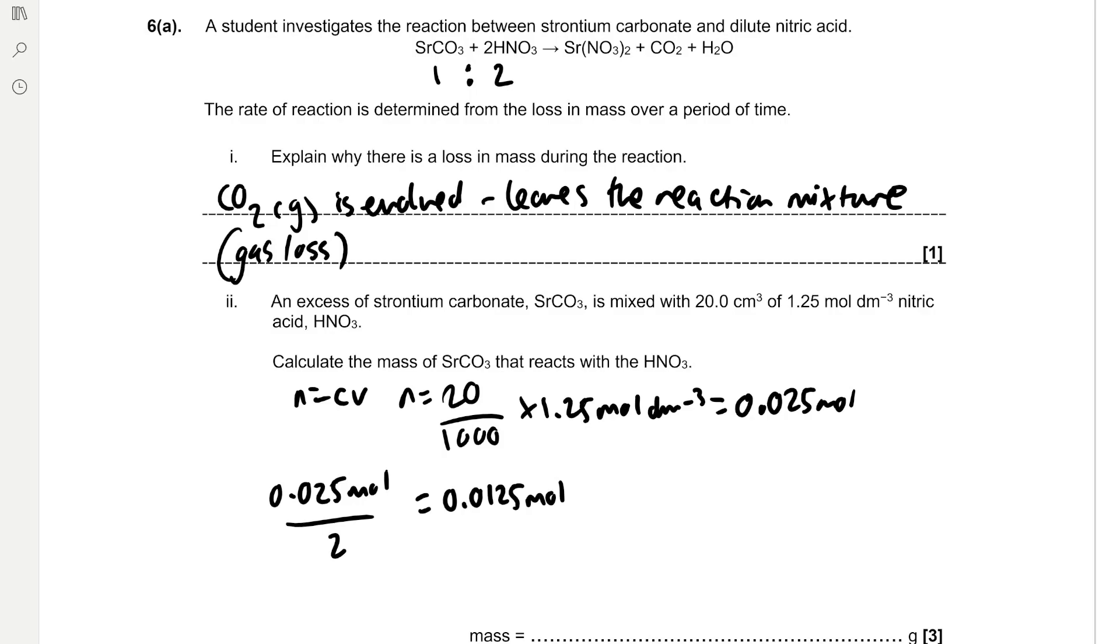We can find the mass using the formula moles equals mass over Mr. Therefore mass equals moles times Mr. The mass equals 0.0125 mol multiplied by 147.6 grams per mole, which is 1.845 grams. But we need to use the same number of significant figures as given in the question, and they give all numbers to three significant figures. So to three significant figures the answer is 1.85 grams.